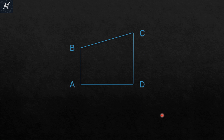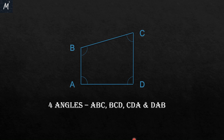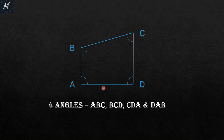The third part is the angles of a quadrilateral. The four angles are angle A, angle B, angle C, and angle D. There is another method to name these angles. Angle ABC is the one formed at vertex B, so it is called ABC. BCD is formed at angle C. Similarly, the angle at D is called CDA, and the angle at A is called DAB.